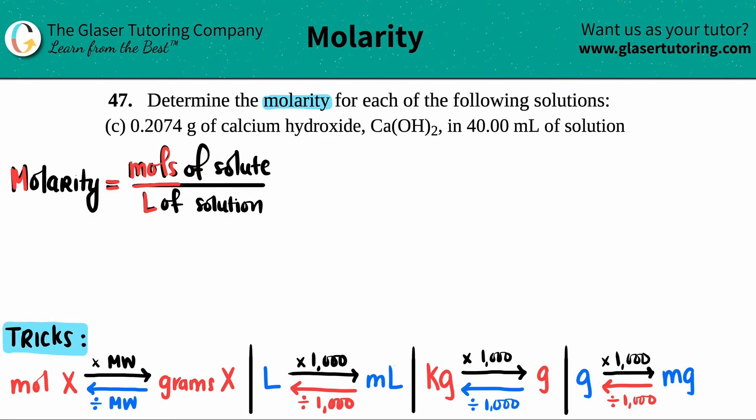The solute is the solid placed in the solution. My formula is capital M equals moles over liters. If we're solving for molarity, I need moles and liters. But they gave me 0.2074 in grams, not moles, and 40 mL, not liters. So first I have to convert these two values to get moles and liters.